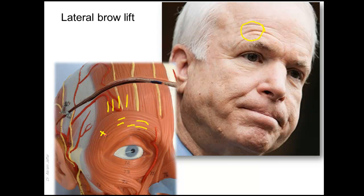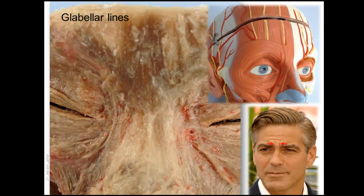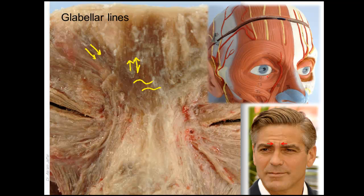Glabellar lines are created by the action of corrugator supercilii, which draws the eyebrows downwards and medially, resulting in vertical lines. The procerus muscle contributes horizontal lines between the eyebrows. For corrugator supercilii, the injection should be given in the eyebrow above the orbital margin as a deep injection, because the muscle is deep — located deep to orbicularis oculi.